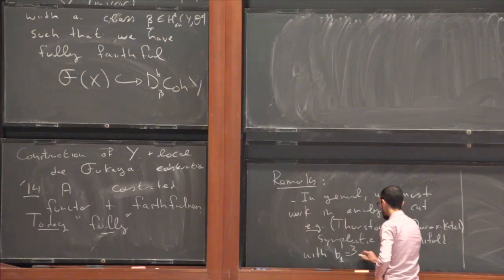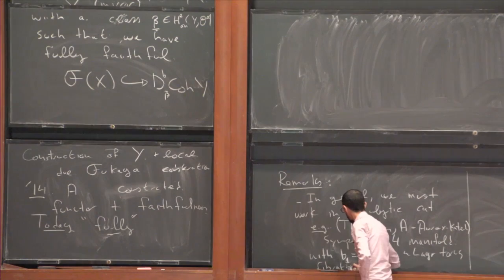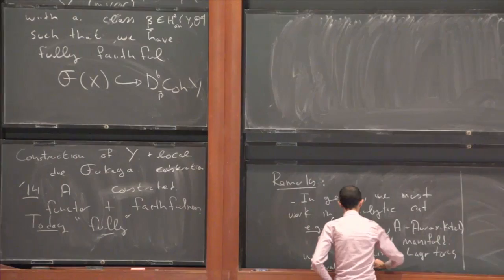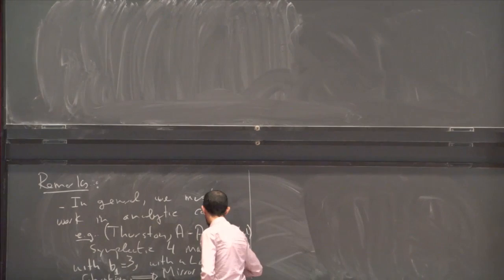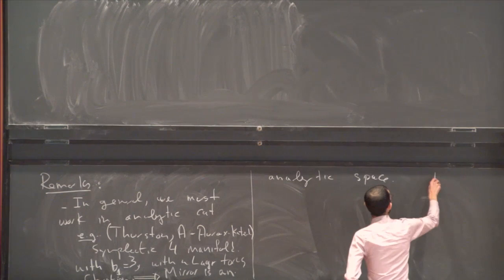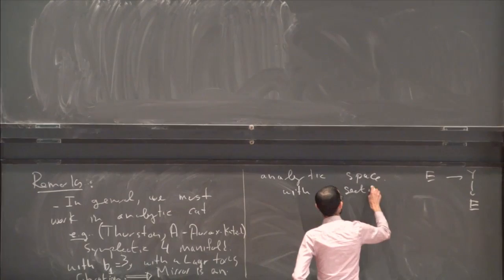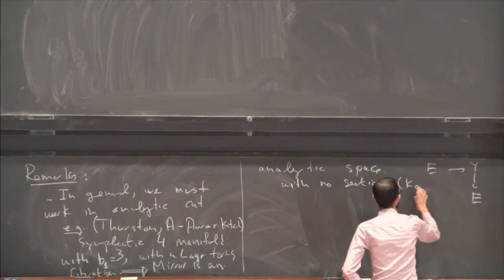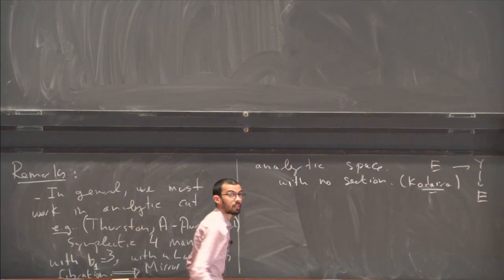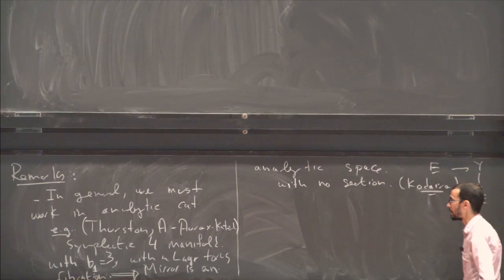This manifold actually has a Lagrangian torus fibration. When you feed it into this machine, the mirror is an analytic space which is, in fact, an elliptic fibration over an elliptic curve with no section. This is a class of examples studied by Kodaira, and he proved that these are certainly not projective. So somehow, studying coherent sheaves will force you to do something analytic.